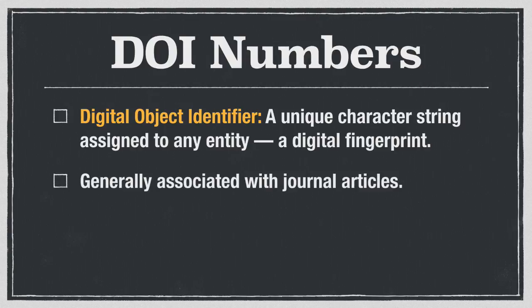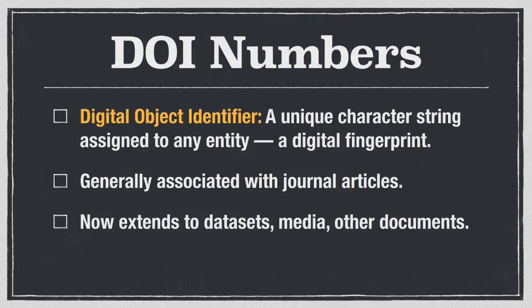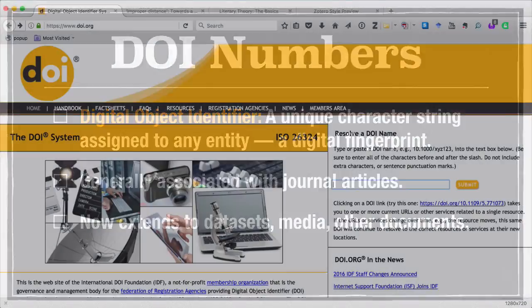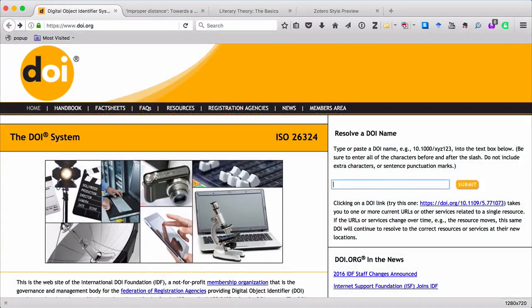Traditionally, DOI numbers have been associated with individual journal articles. More recently, however, people are attaching DOIs to all sorts of things — to data sets, to media, to other documents. And it's in the case of those other documents that this tip will apply. You can see I've opened Firefox to the web page DOI.org, and this is the place you can go if you want to look up any DOI in the world.